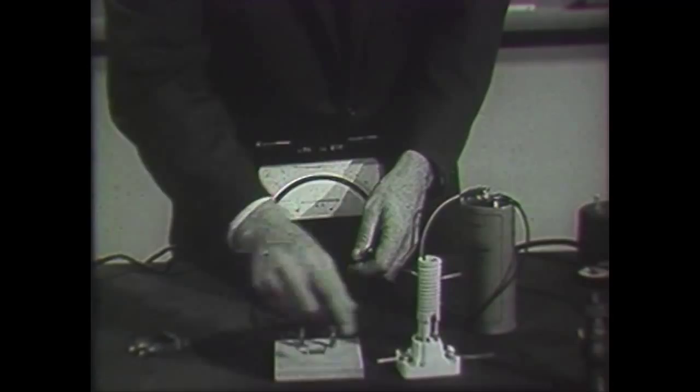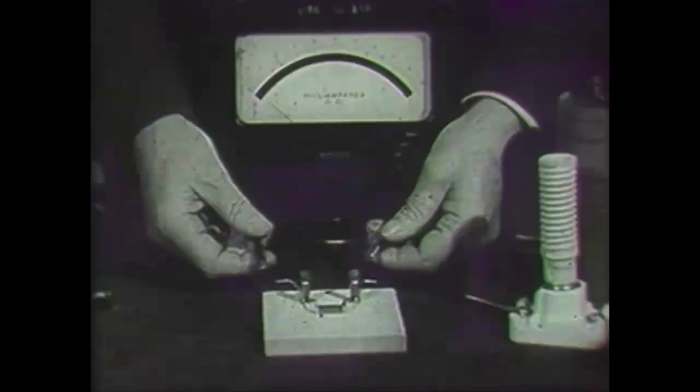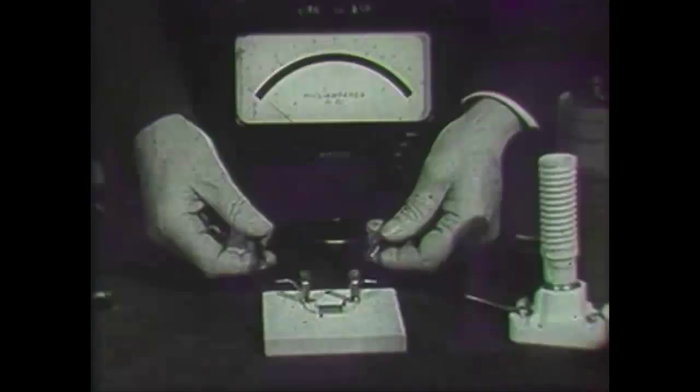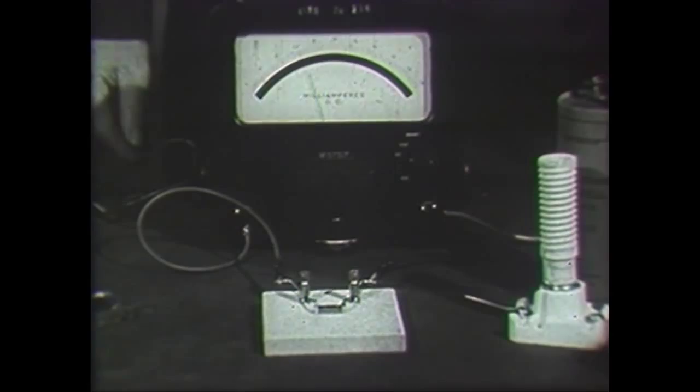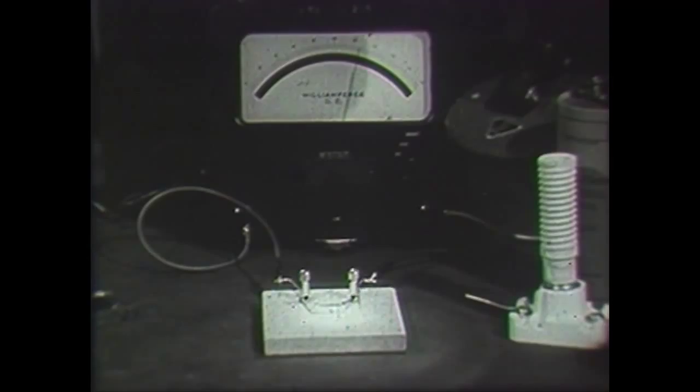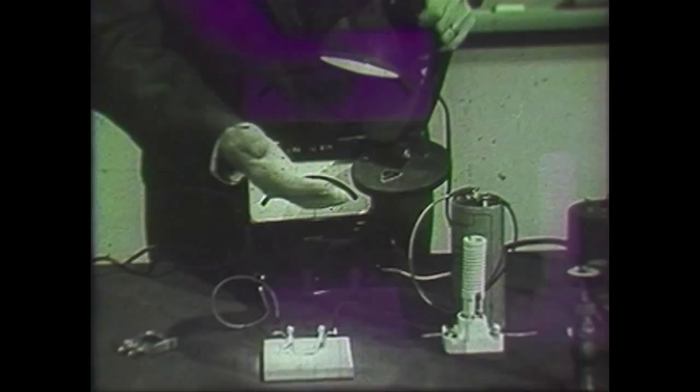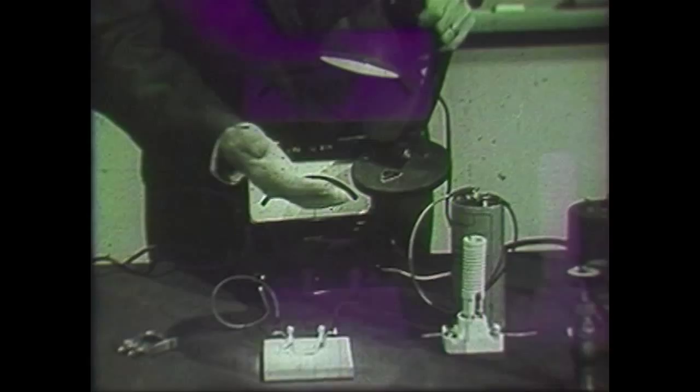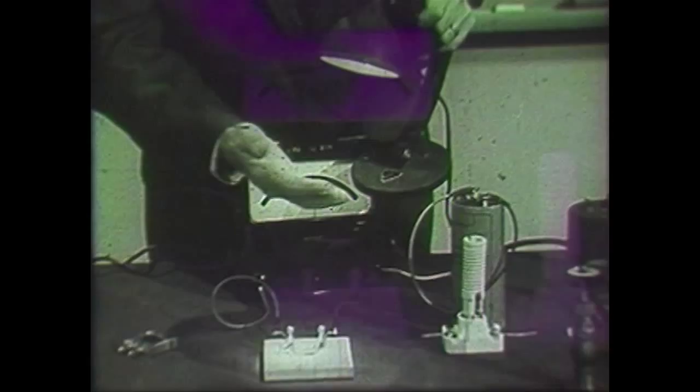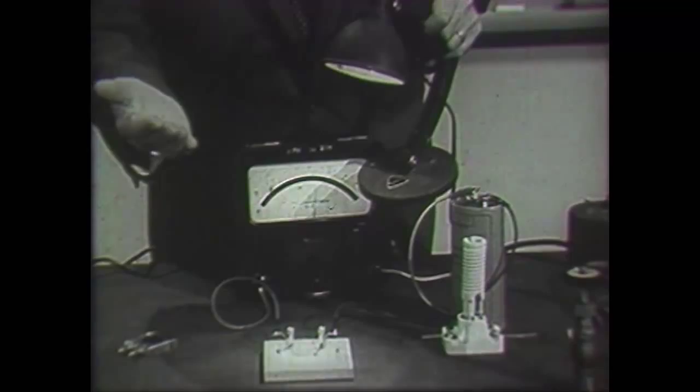Another property that semiconductors have is that their conductivity is sensitive to light. If I reconnect this piece of semiconductor here in my circuit and turn the meter back down on the more sensitive scale, and then shine this light on the semiconductor, you see the amount of current that flows is greatly increased. This is a light effect and is instantaneous, as I take my hand in and out of the light.